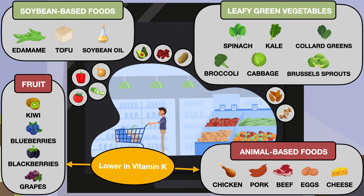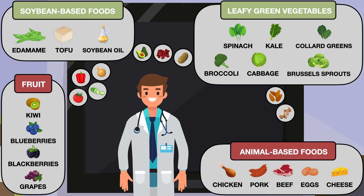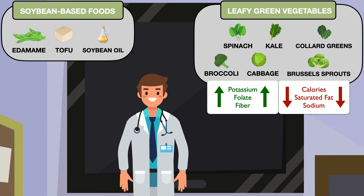Other plant-based foods like avocado, beans, potatoes, nuts, mushrooms, onion, bell pepper, cucumber, and tomato do contain some vitamin K, but are not typically considered major sources. Even though it's possible to maintain a desirable INR with chronically low but consistent vitamin K intake, it may not be ideal. After all, these foods contain beneficial nutrients beyond vitamin K. Leafy green vegetables are high in potassium, folate, and fiber, and are naturally low in calories, saturated fat, and sodium.